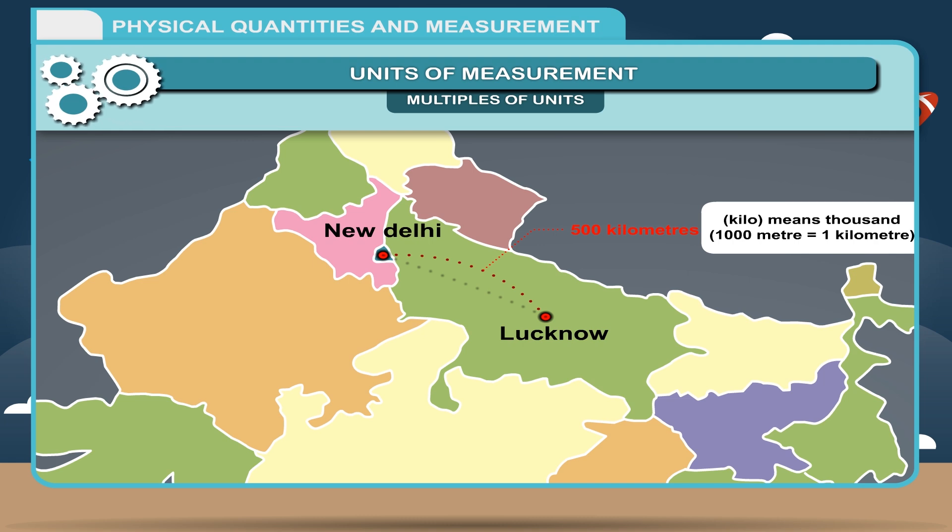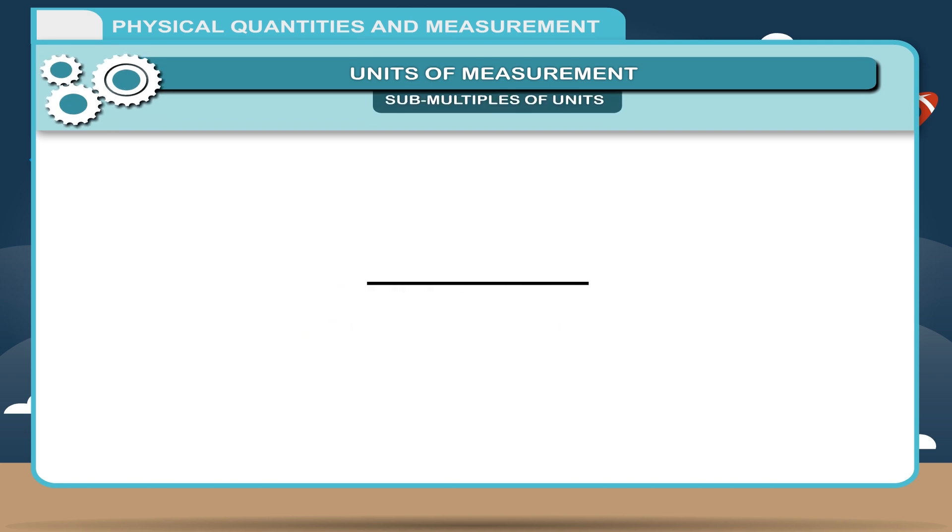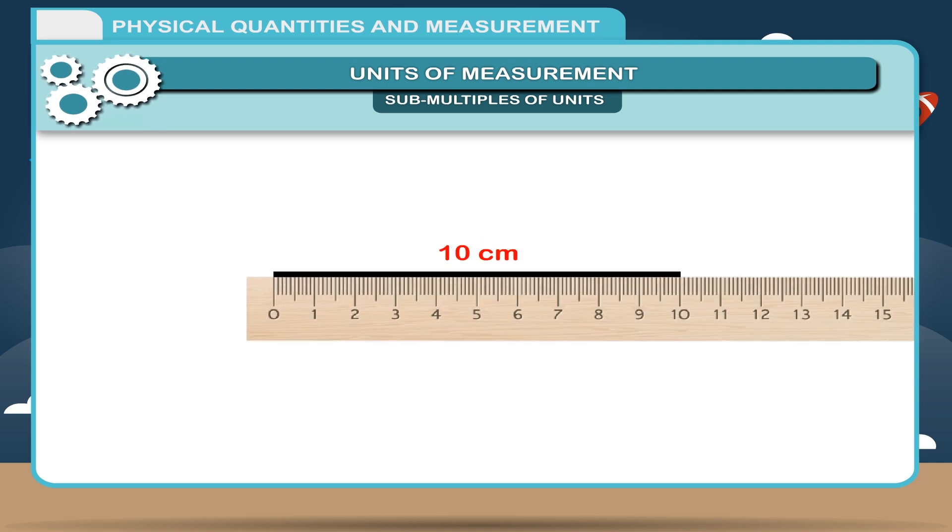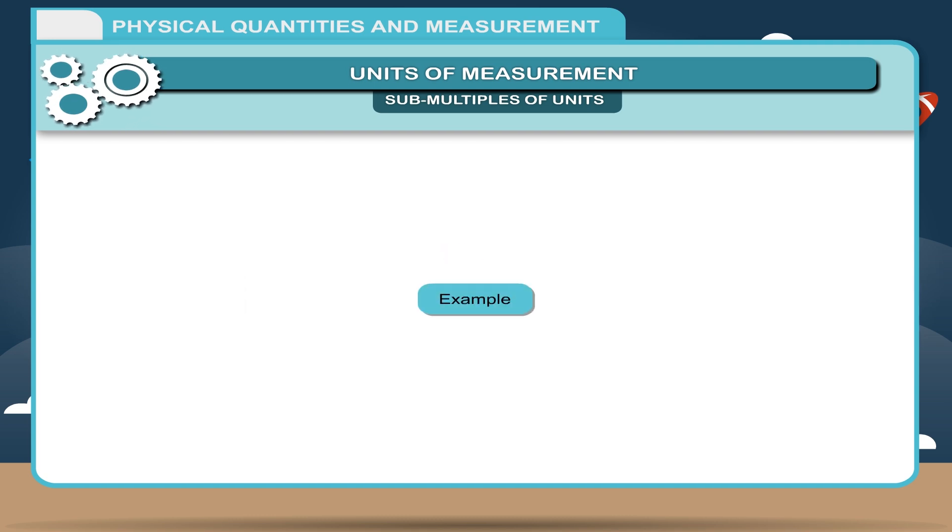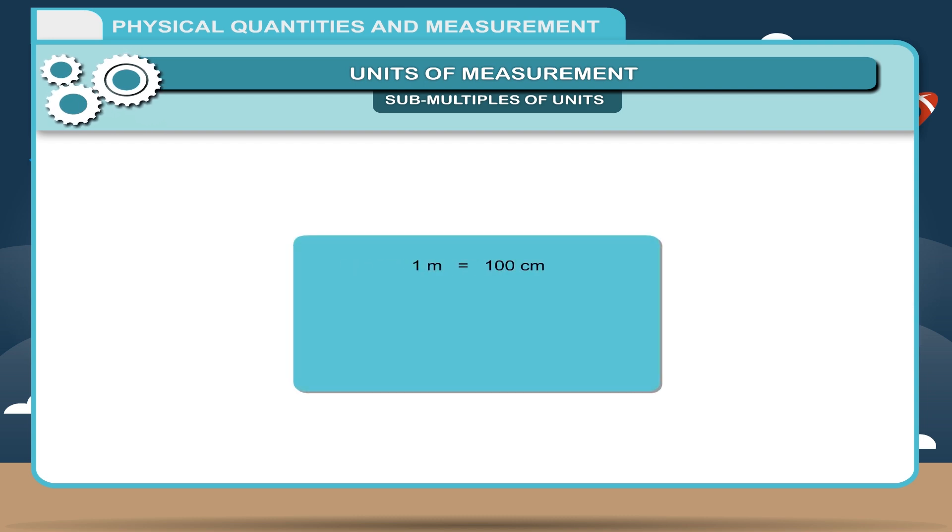Multiples are the factors used to create larger forms of units. Sub-multiples of units: Sub-multiples are the factors used to create the smaller forms of units. Sometimes, we have to measure smaller lengths, then we use sub-multiples of units. For example, if we want to measure the length of a small wire, we measure in centimeters or millimeters. These are sub-multiples of units. One meter equals 100 centimeters. One meter equals 1000 millimeters. One centimeter equals 10 millimeter.